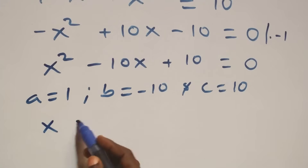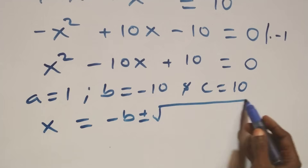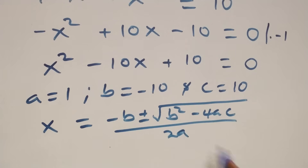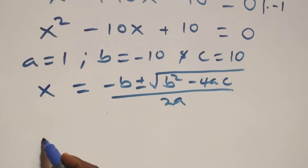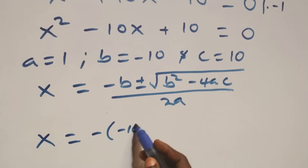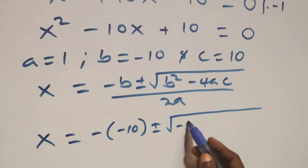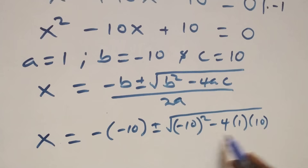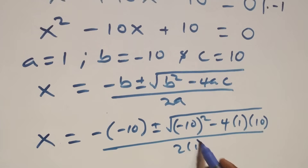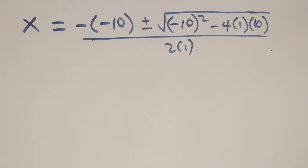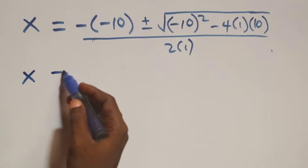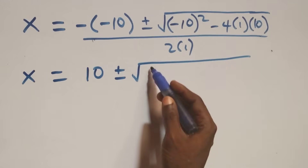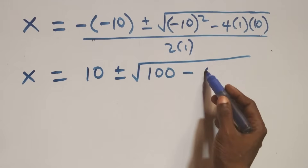We apply the quadratic formula: x equals minus b plus or minus square root of (b² minus 4ac), all over 2a. Substituting, we get x equals 10 plus or minus square root of (minus 10 squared minus 4 times 1 times 10), all over 2. That is, square root of (100 minus 40), which gives 60.